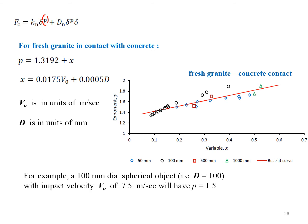The exponent p is another parameter to be estimated from testing. Based on the fresh granite in contact with a concrete surface, we have also derived the correlation between p with the velocity of impact, and also with the size, the diameter of the specimen.